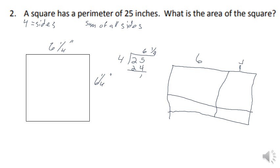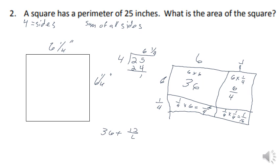So I set up six and one-quarter times six and one-quarter. Six times six is 36; six times one-quarter is six-fourths; one-quarter times six is six-fourths again; and one-quarter times one-quarter equals one-sixteenth. Adding them all: 36 plus twelve-fourths plus one-sixteenth. Twelve-fourths equals three, so 36 plus 3 plus one-sixteenth equals 39 and one-sixteenth square inches.